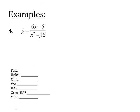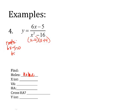Let's try the next one. Factoring the denominator gives (x − 4)(x + 4), which tells me there are no holes. For roots, set the numerator equal to zero and solve: x = 5/6, so the root is at (5/6, 0). For vertical asymptotes, set x − 4 = 0 and x + 4 = 0, giving vertical asymptotes at x = 4 and x = −4.